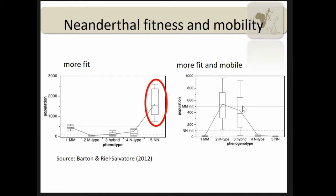In another experiment, they left all the parameters the same and just changed the mobility of the Neanderthals — and what changed is the Neanderthals got extinct. This is a model and there are a lot of factors not considered, but what we learn from it is that in a confined system where we just change the mobility, it may make the difference between survival and extinction. So I think that's worth looking at the mobility of the Neanderthals.